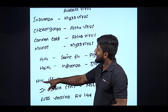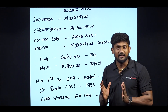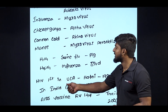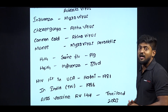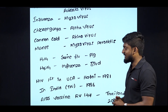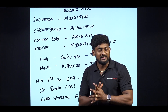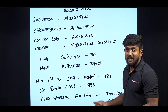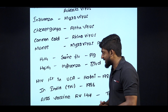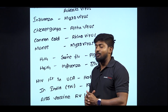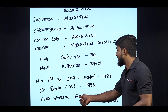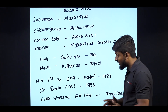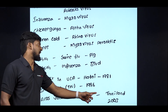HIV is a very important virus. HIV was first reported in the US. In India, the first case also happened. A vaccine was developed — the last vaccine trial was in Thailand in 2013.